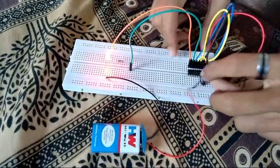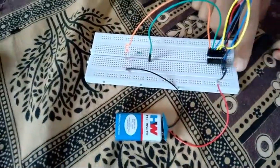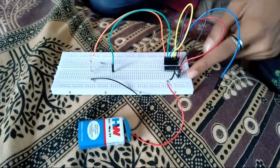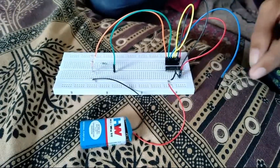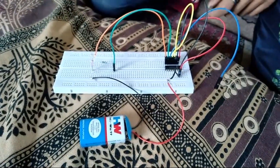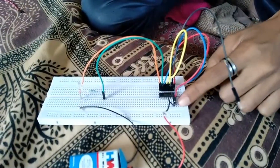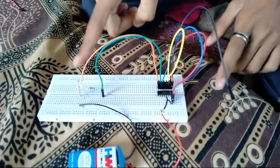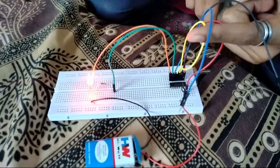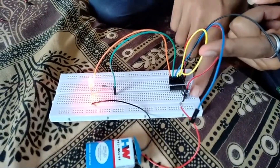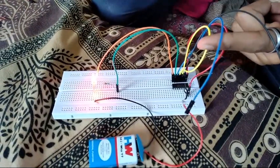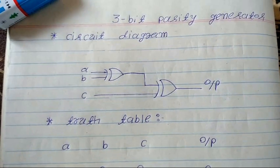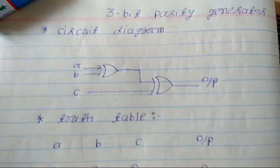When input X=1, Y=1, and Z=0, output is 0. Again, when X=1, Y=0, and Z=1, output is 0. In this example when X=1, Y=0, and Z=0, output is 1. Here is the circuit diagram of the 3-bit parity generator.